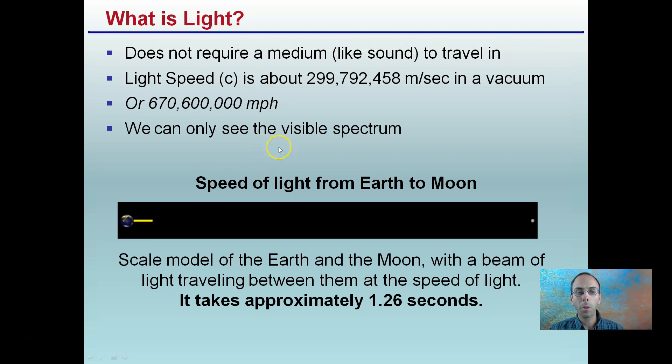To put this into perspective, the speed of light from the Earth to Moon is represented here. This is a scale model of the Earth and the Moon with a beam of light traveling between them at the speed of light. It takes approximately 1.26 seconds for that beam of light to leave Earth and go to the Moon. We all know what a great distance that is.